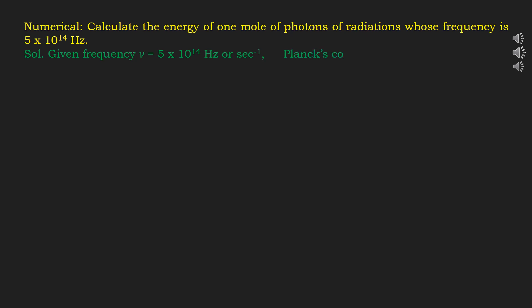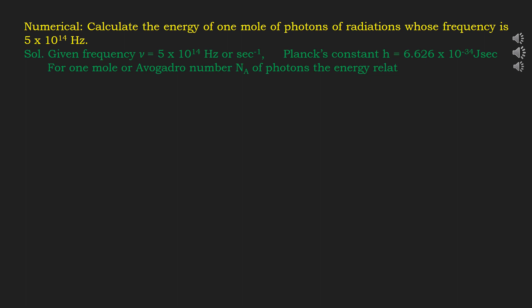Planck's constant h = 6.626 × 10⁻³⁴ joule second. For one mole or Avogadro's number of photons, the energy relation becomes E = Nₐhν.